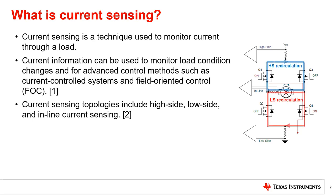During the decay phase, the motor winding current can either be recirculated between the bottom FETs, which is called low-side recirculation, or recirculate between the two high-side FETs, which is called high-side recirculation. The image to the right shows the current paths for both high-side and low-side recirculation. As you can see, no current flows through the high-side or low-side shunt resistors during this period, so no current sensing is possible. However, current sensing is possible with in-line sensing.